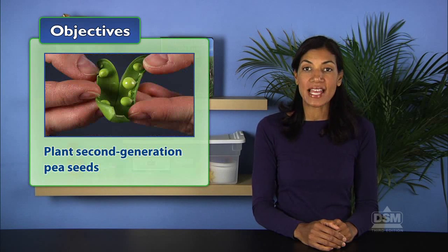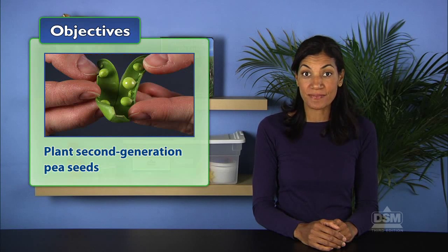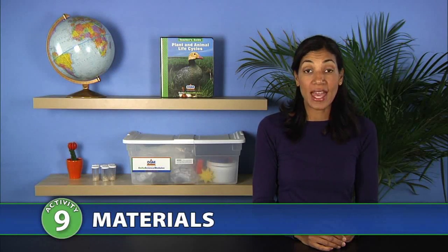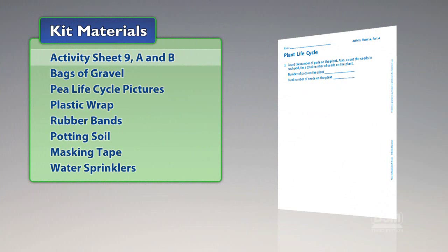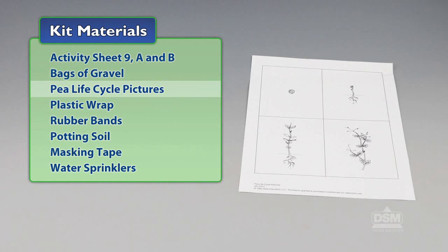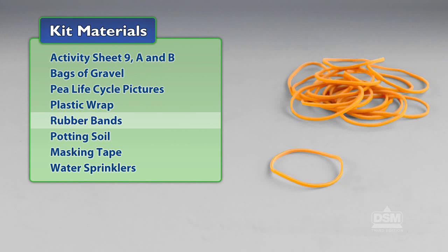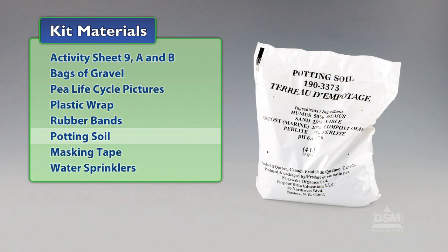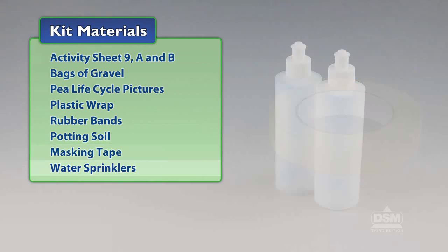Finally, students plant second-generation pea seeds. You will need the following materials from the kit: Activity Sheet 9 Parts A and B, bags of gravel, pea life cycle pictures, plastic wrap, rubber bands, potting soil, masking tape, and water sprinklers.